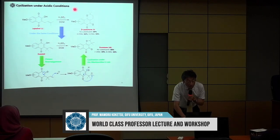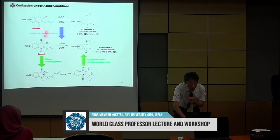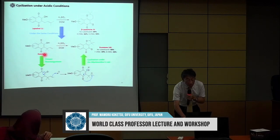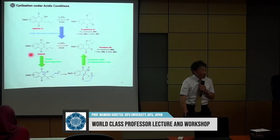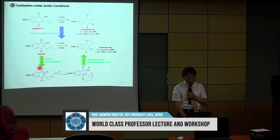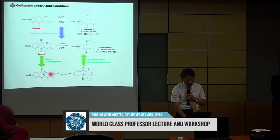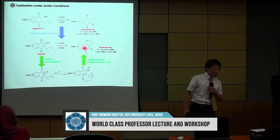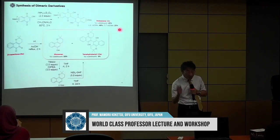When we use acidic conditions, it becomes this type of compound. And in another case, under acidic conditions it becomes a five-membered ring rather than a six-membered ring. This is the reaction mechanism we believe: first, rearrangement occurs to give this intermediate, and then oxygen attacks here, forming the five-membered ring. This is the mechanism I believe.